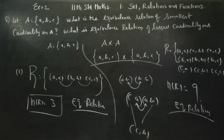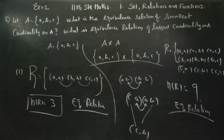What is the equivalence relation of smallest cardinality? What is the equivalence relation of largest cardinality? Thank you.